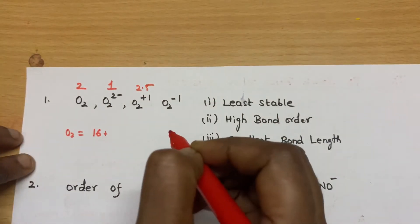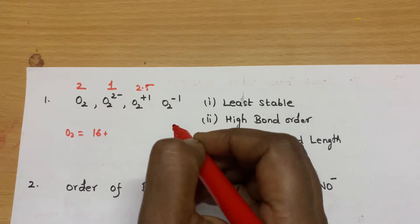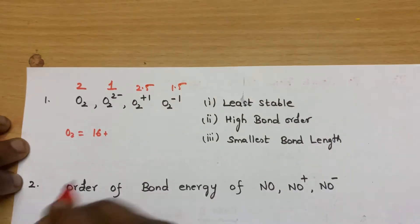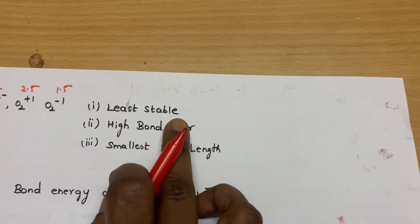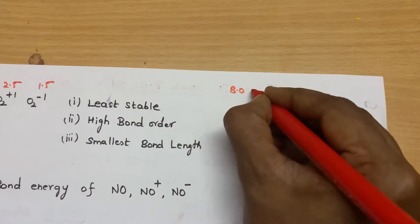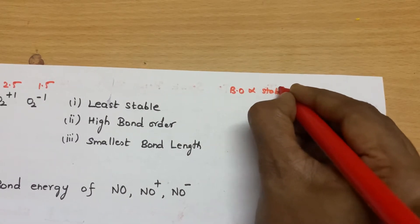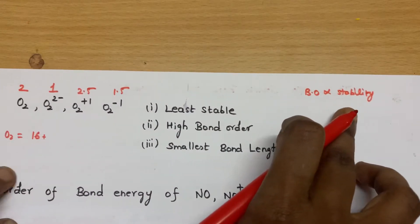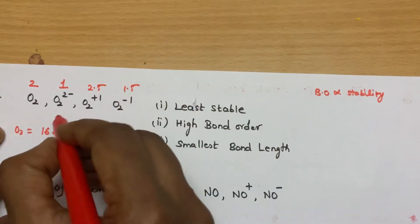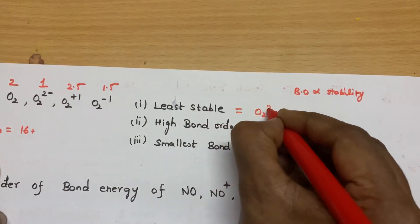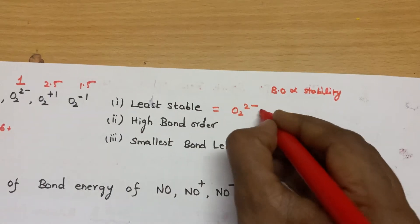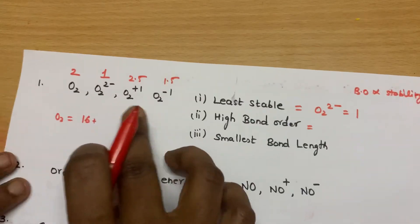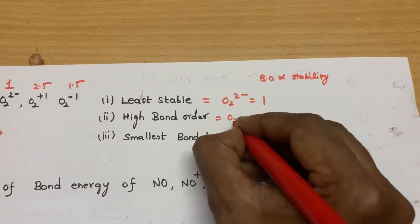And for O₂²⁻, the bond order is 1.5. So which is least stable? According to the rule, as the bond order increases, the stability also increases. So for whichever species the bond order is least, that will have the lowest stability. The answer is O₂²⁻ with bond order 1. The least bond order means the least stability. O₂⁺ is having the highest bond order.